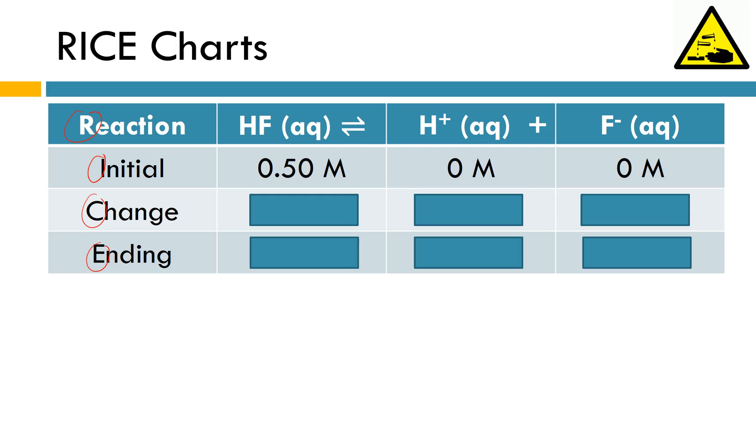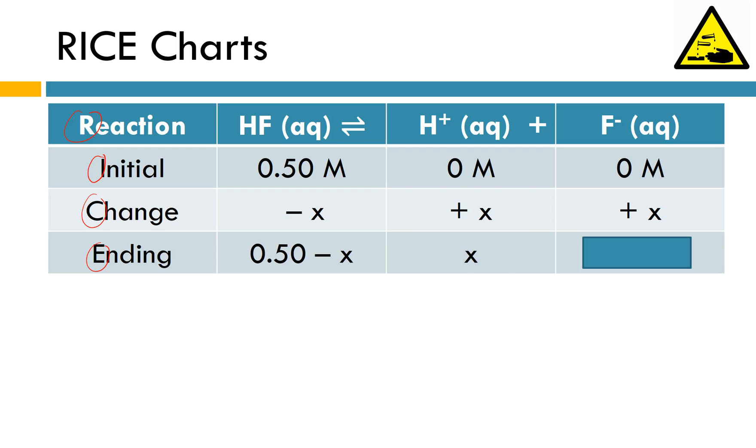By how much, we don't know. But we know we're going to be subtracting some amount. Every time one HF breaks apart, we make one H+ and one F-. They're going to be present in the same ratio, so equal quantities or equal concentrations. So that means when it's all said and done, the concentration of HF is going to be 0.50 molar minus some amount, and the concentration of both the H+ and F- ion is going to be equal to X.